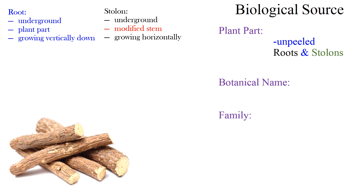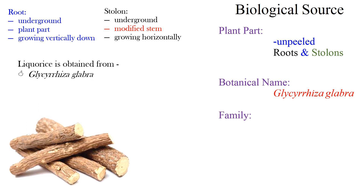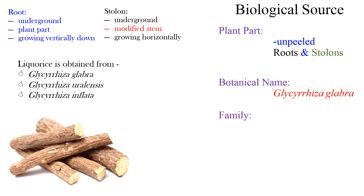Coming to botanical name, the botanical name of the plant is Glycyrrhiza glabra. In fact, liquirice is obtained from Glycyrrhiza glabra as well as from Glycyrrhiza uralensis and Glycyrrhiza inflata. They belong to the family Leguminaceae, also known as Fabaceae.